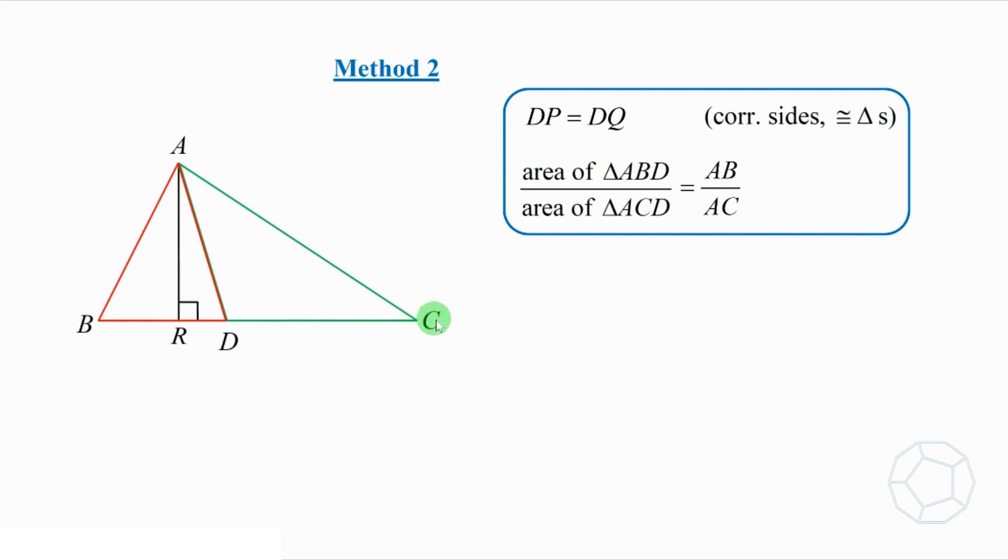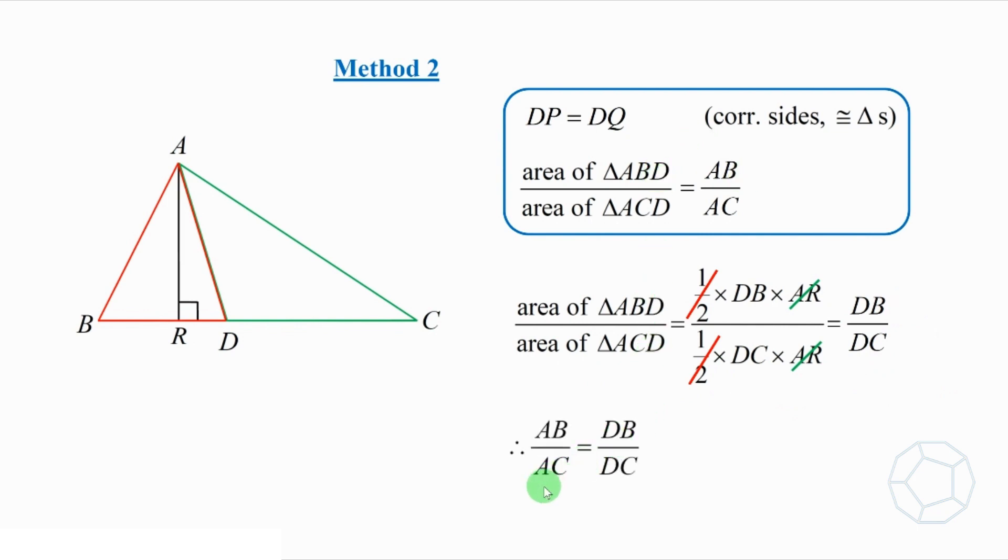So we can find the ratio of the areas of the two triangles again. Putting the bases DB and DC and the height AR inside will get this fraction. Again, cancel out 1 over 2 and AR will have the ratio of areas is equal to the ratio of another pair of bases. Putting two results together, we have AB over AC is equal to DB over DC. Rearrange the two links AC and DB, we prove the angle bisector theorem again. This time is by the area method.